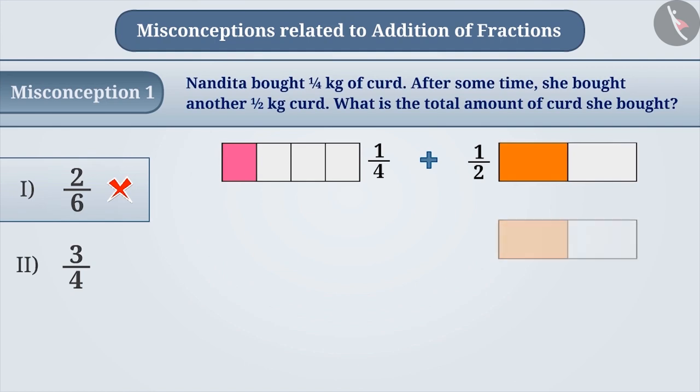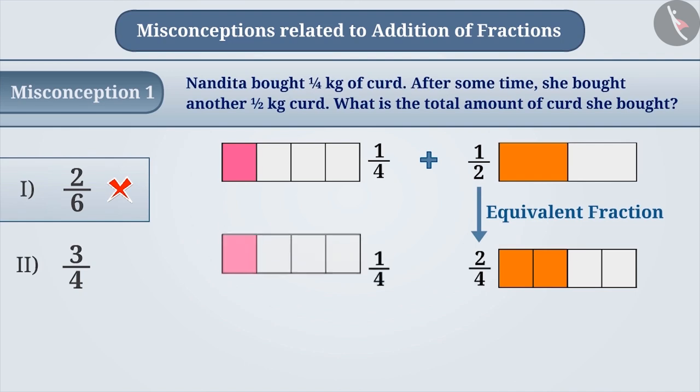In order to make the size of the parts equal, we will divide each part of this rectangle into two equal parts. By doing this, we will get the equivalent fraction of 1/2 as 2/4. The size of the parts in both figures is equal now.